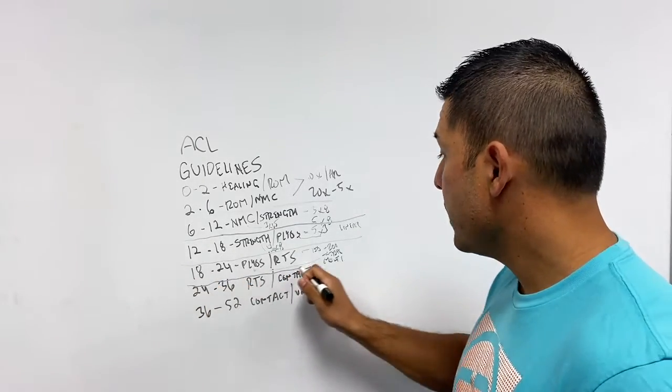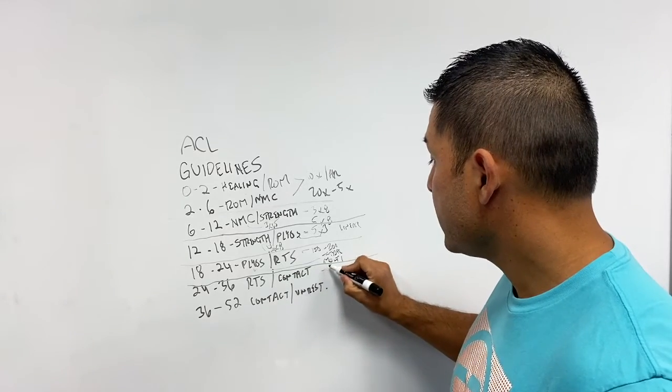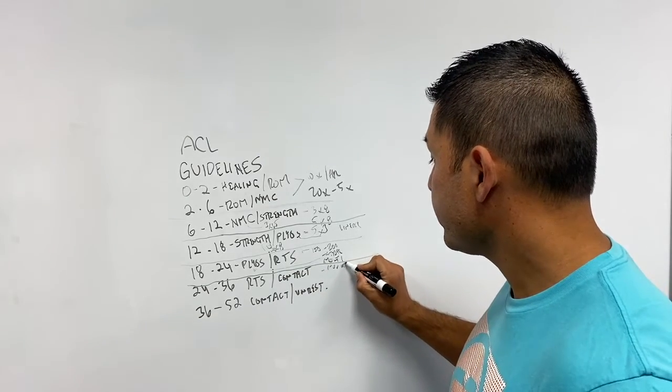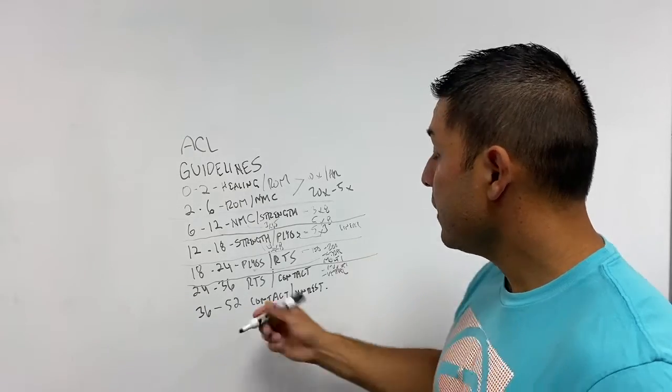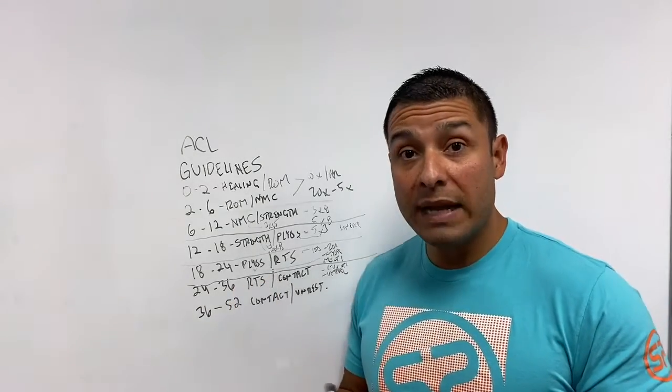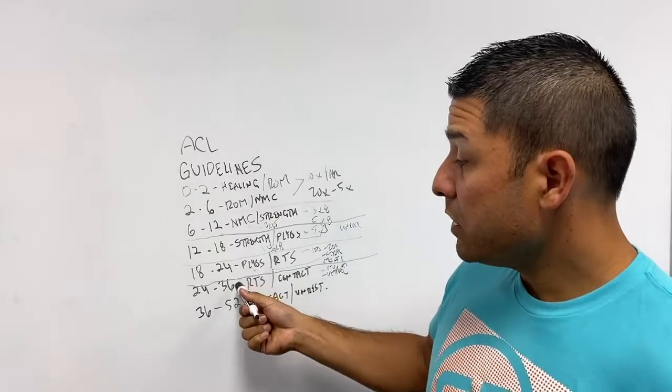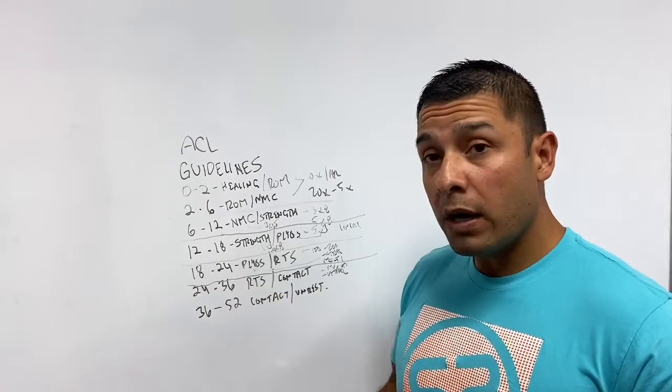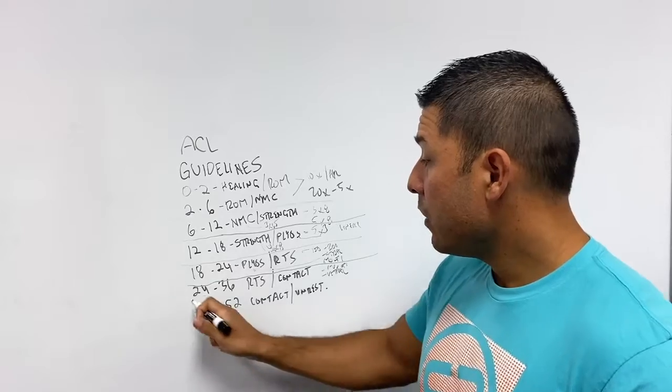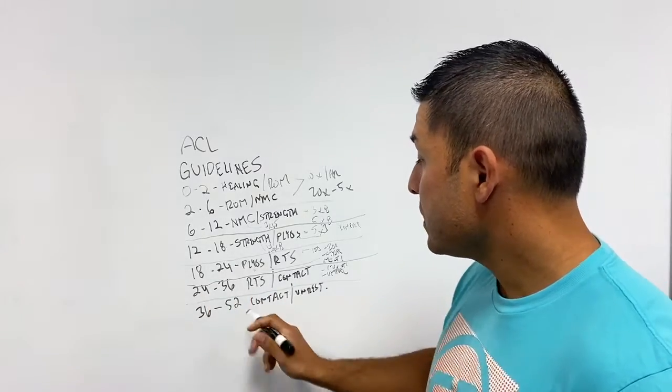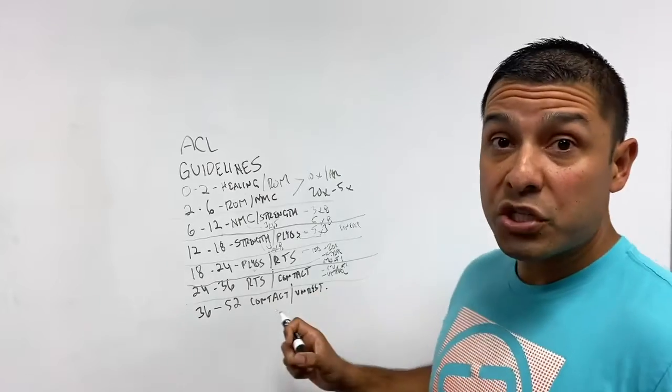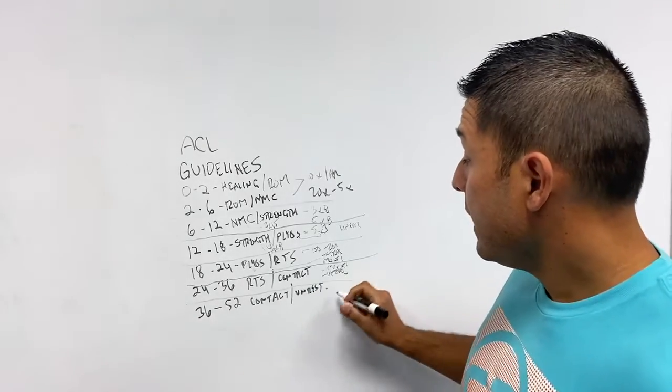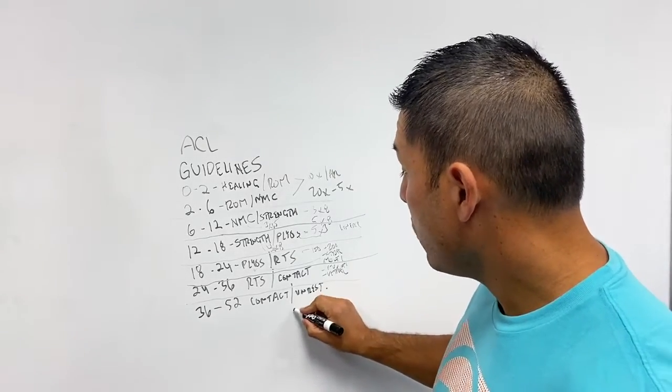And then as you get into that six month protocol, now you're definitely advancing multi-directional work and lateral work. But then here you might be introducing contact, real light contact, depending on your surgeon and how aggressive that protocol is. And then when you finally get out to nine months, you're doing modified contact and then a little bit of unrestricted work towards final freedom, towards that one year mark.